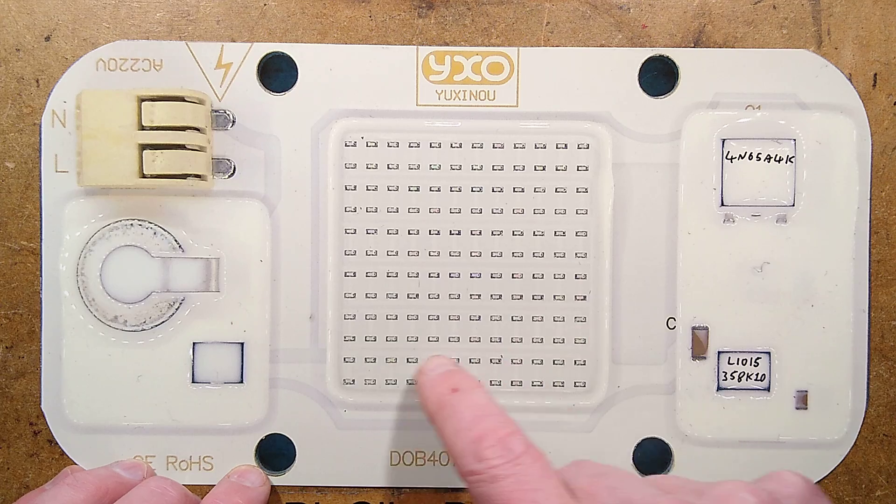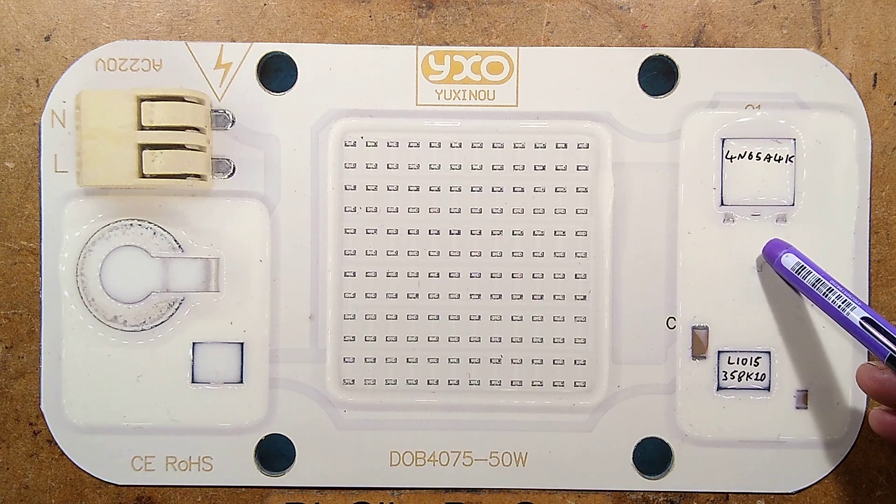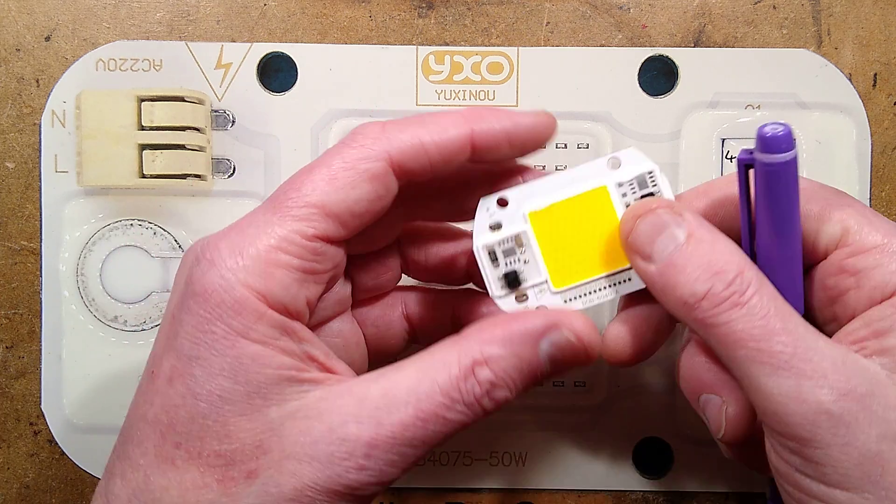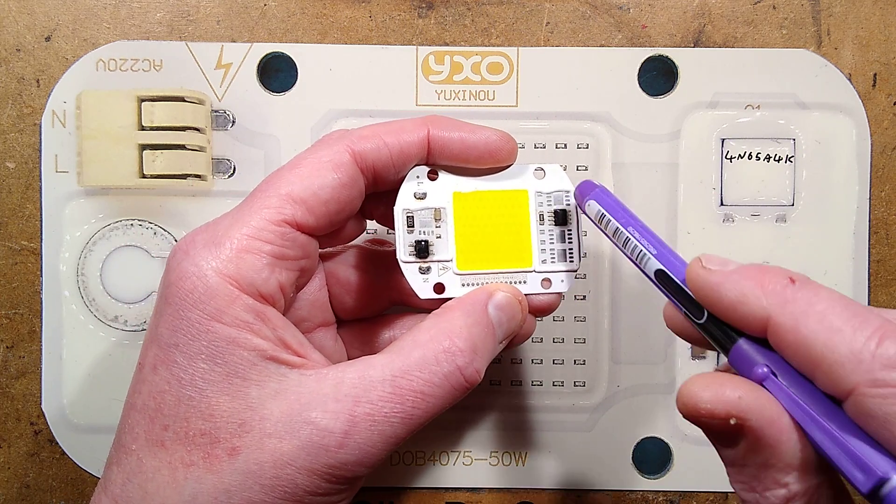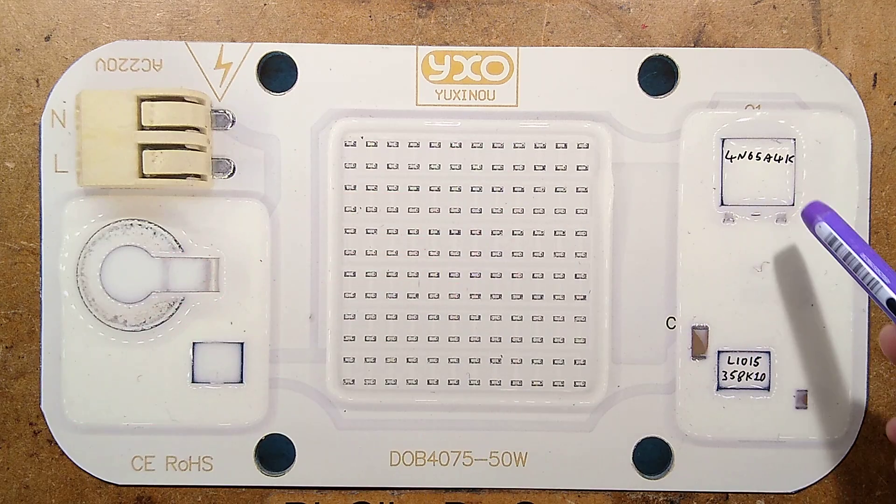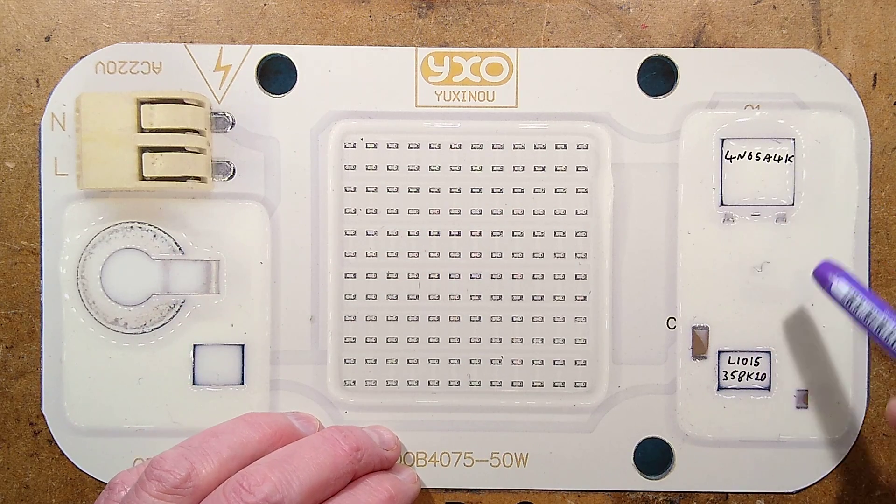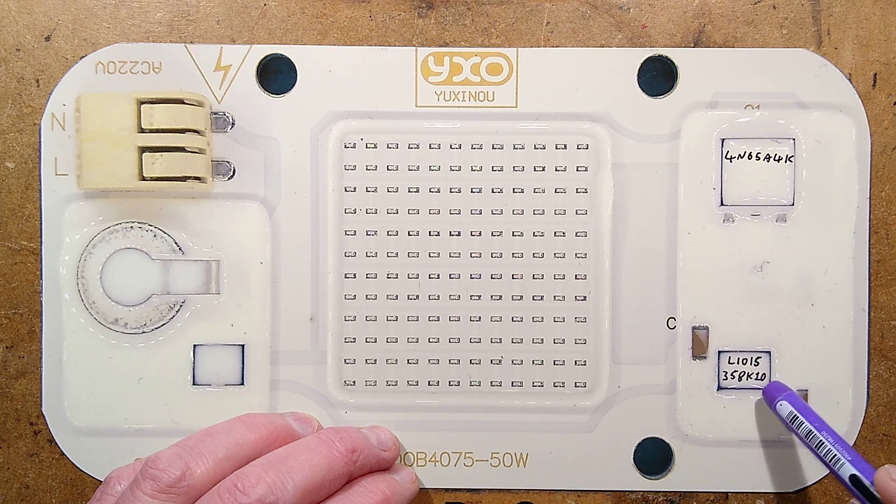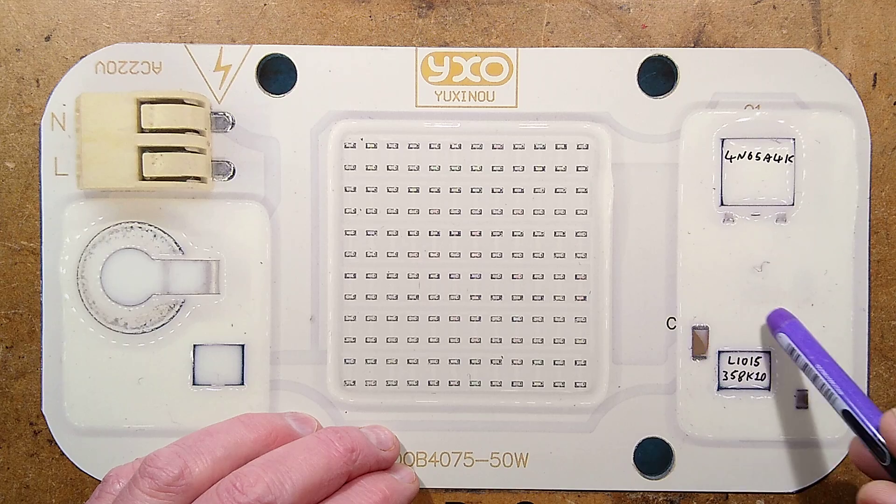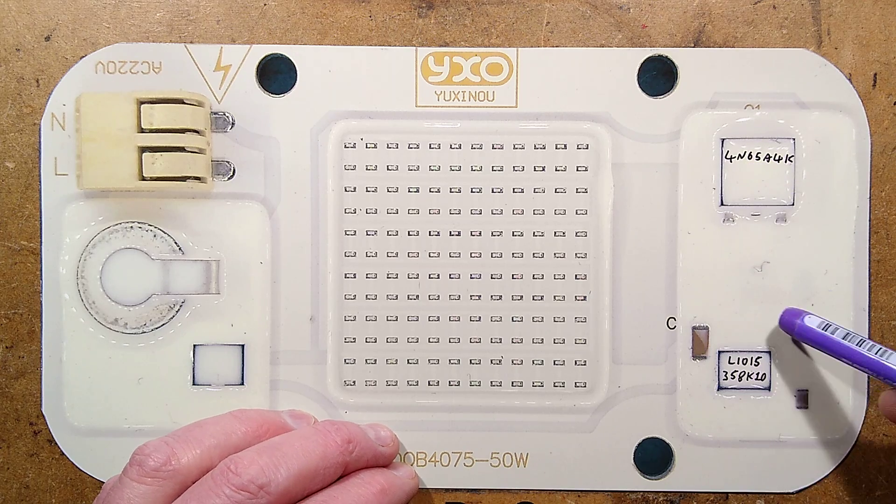They zigzag all the way to the end. But unlike other high power LEDs that have simple rectifiers with loads of linear current regulator chips stacked in parallel, this one has a MOSFET, a 4N65A4K, driven by the very mysterious L1015 or 358K10. This chip is doing the linear current regulation with a high power MOSFET.